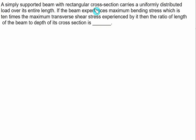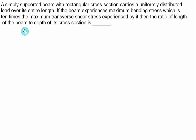A simply supported beam with a rectangular cross section carries a uniformly distributed load over its entire length. If the beam experiences a maximum bending stress which is 10 times the maximum transverse shear stress, then the ratio of the length to depth of its cross section must be found.